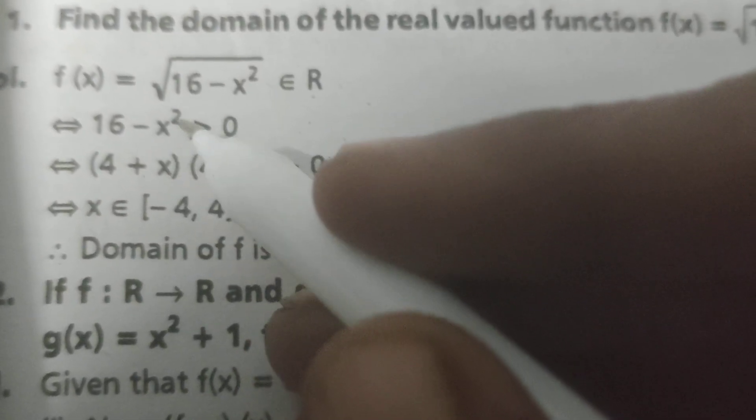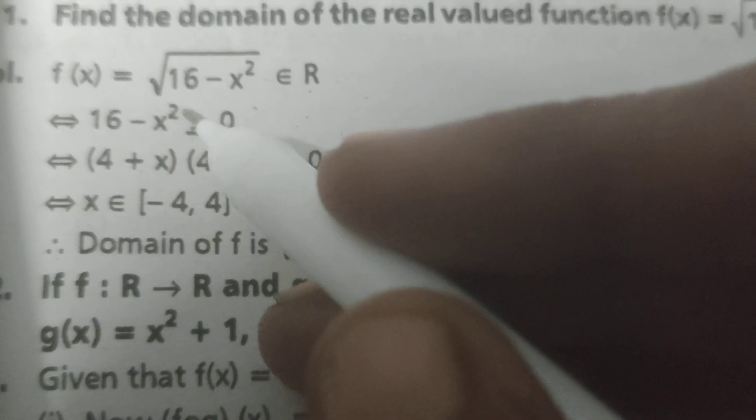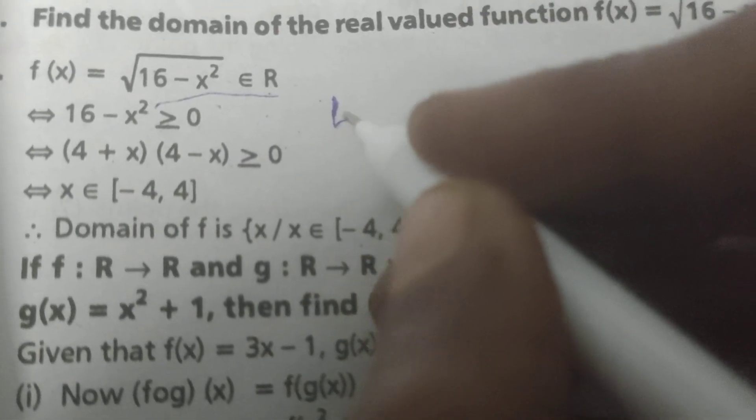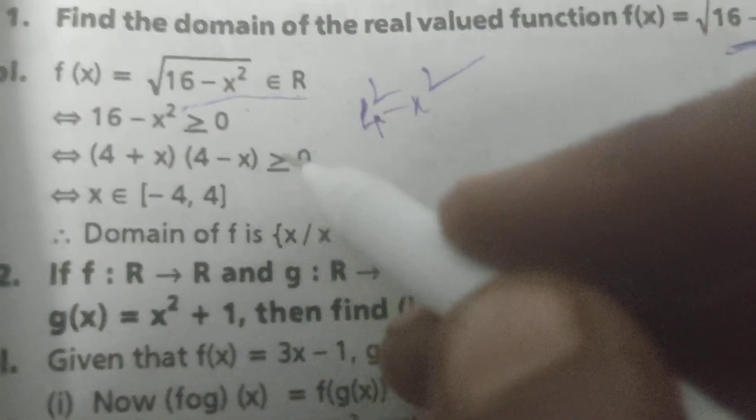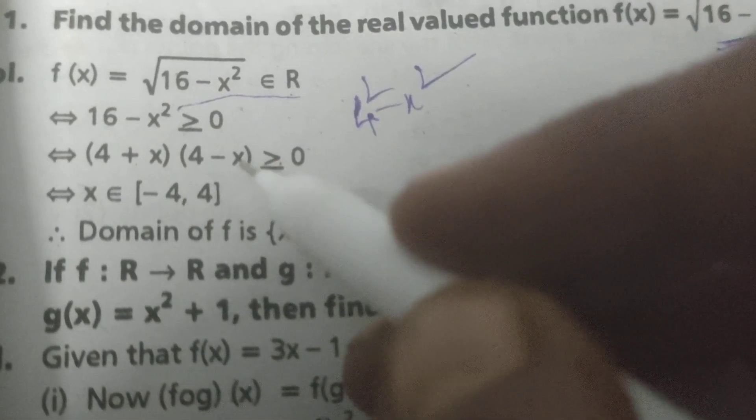Then 16 minus x squared must be greater than or equal to 0. So 16 minus x squared, write first of all as 4 squared minus x squared. Applying the a squared minus b squared formula: a plus b times a minus b.